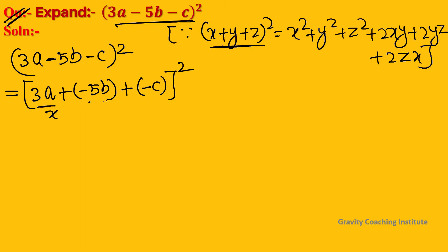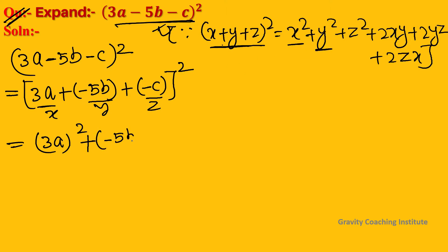Suppose x = 3a, y = -5b, and z = -c. Then we will use this formula: x square = (3a)², y square = (-5b)², z square = (-c)², plus 2xy terms.